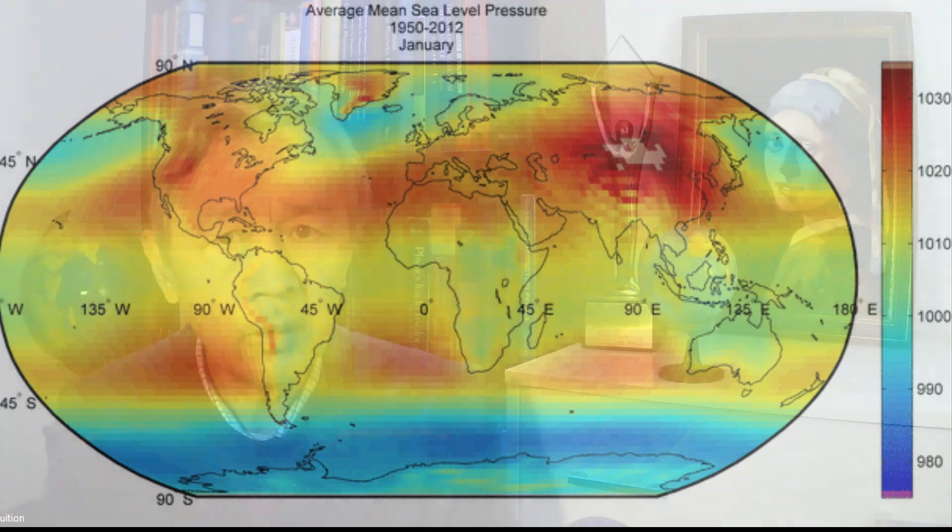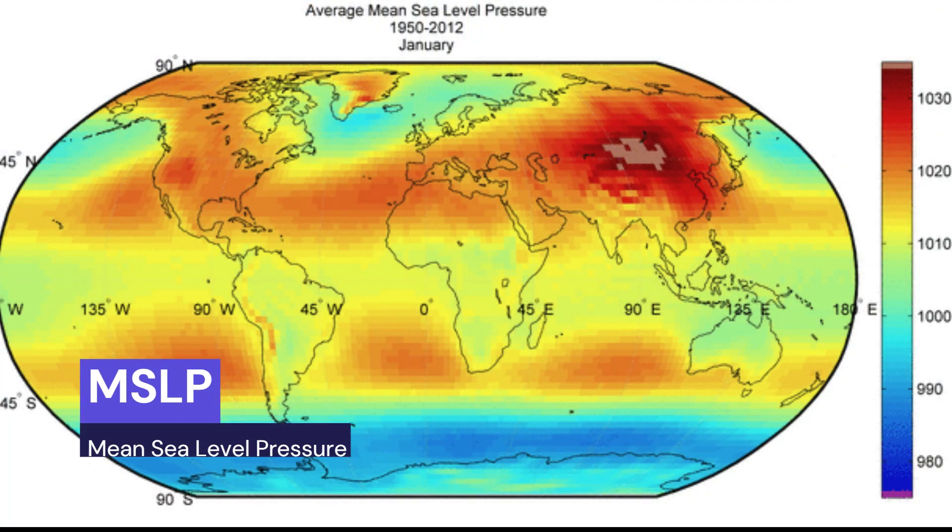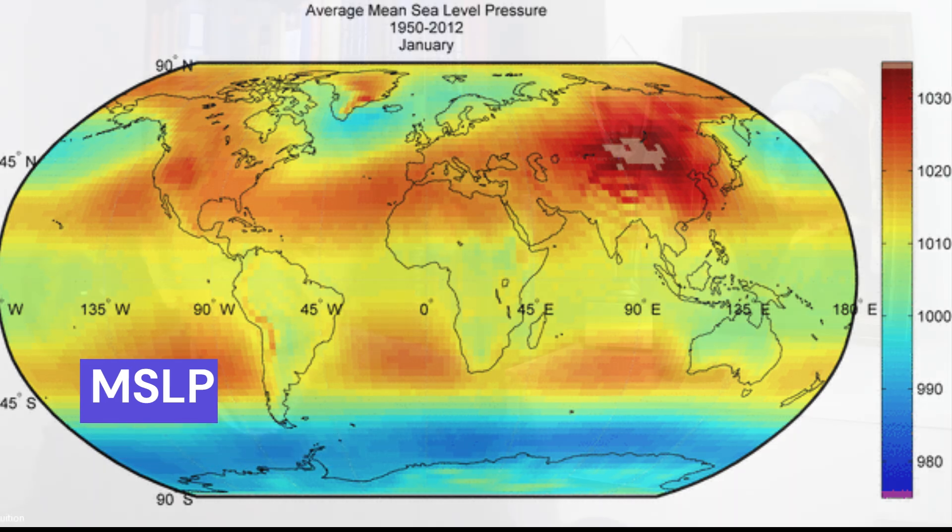Similar to global mean surface temperature, or GMST, it is impossible to obtain global mean surface pressure. Instead, a mean sea-level pressure, or MSLP for short, is frequently used for a short period of time. That's why those isobar curves in the weather map are time-dependent and must be updated every hour. This is understandable as weather forecasts are almost impossible without using such time-dependent isobars.